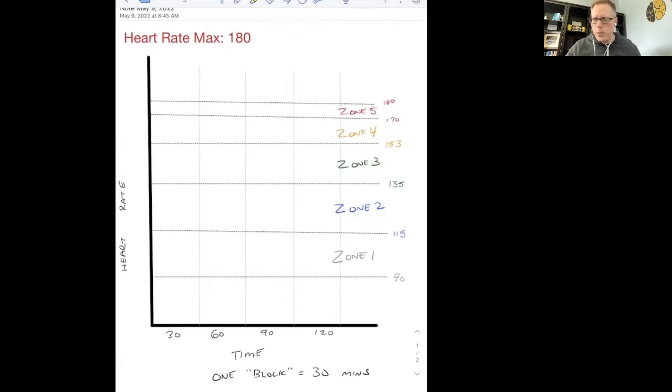So for example, if we say that we want one block of zone two, that would mean you're going to do 30 minutes of zone two workout. Now I've given you an example here. I've got somebody with a heart rate max of 180 and I've told you how to derive your max heart rate in previous videos.